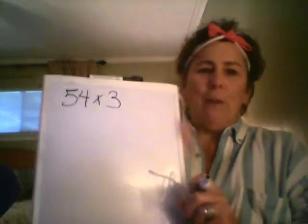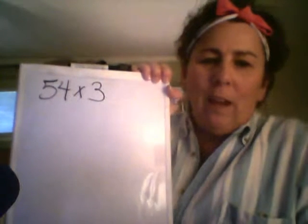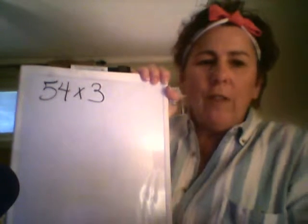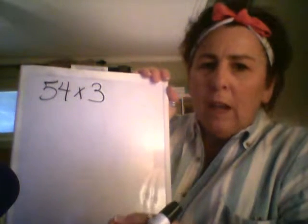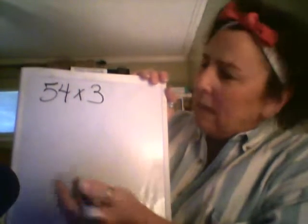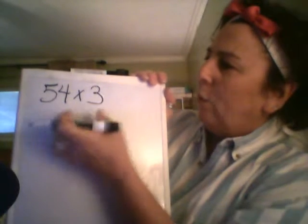So you remember the other day we were talking about place value and the importance of place value. Today I'm going to start a three-part series on multiplication and how you use place value in order to teach multiplication. I have one problem ready and I hope you'll be able to see my board. So this is the first problem we're going to talk about. When we talk about place value, why it's so important is because students need to be able to see that this is 54 times 3.